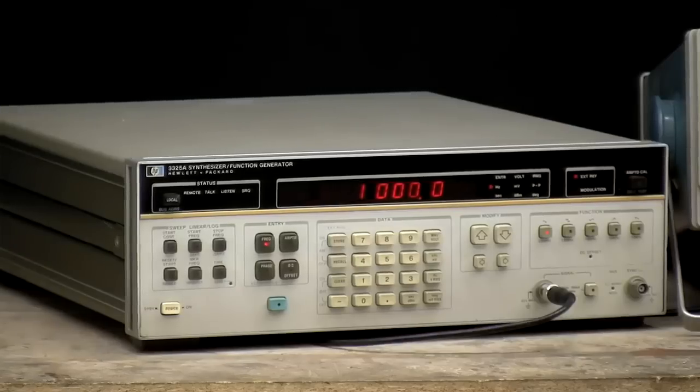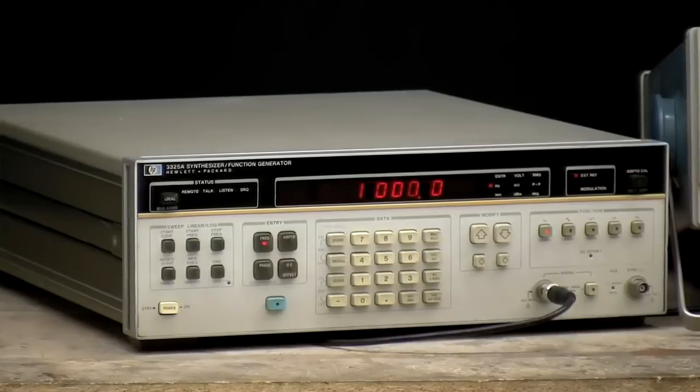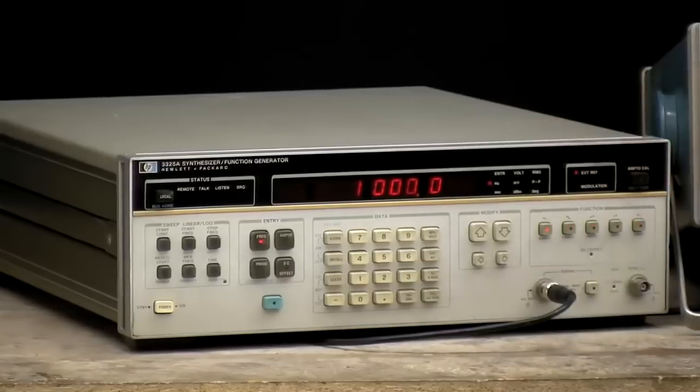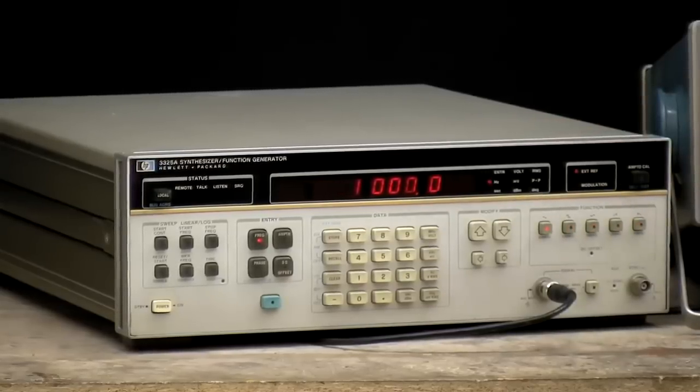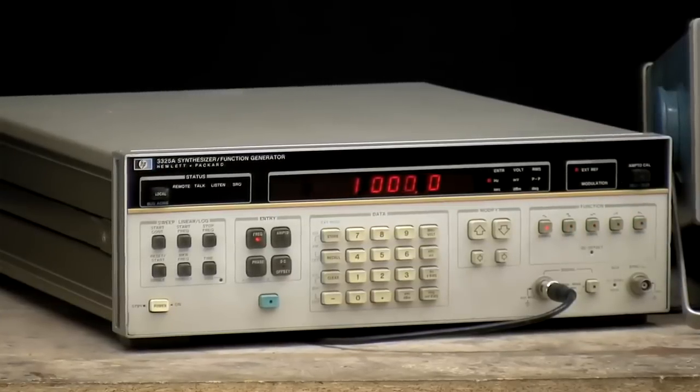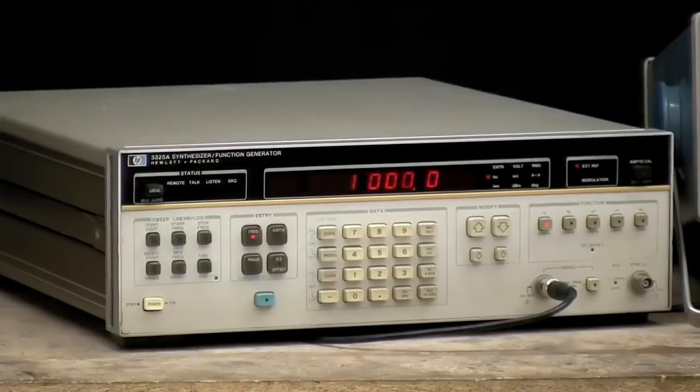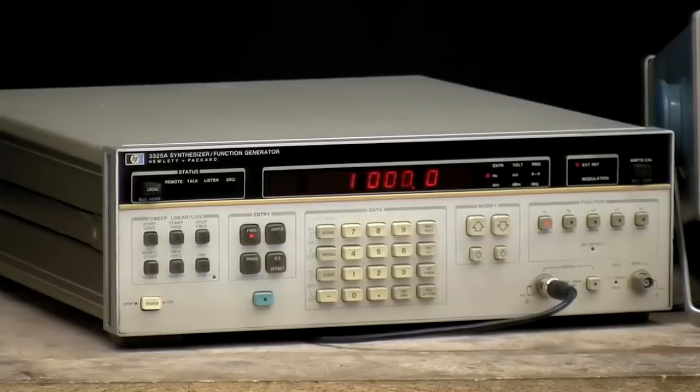First up, we need a signal generator to provide us with analog input signals, in this case an HP 3325 from 1978. It's still a pretty good generator, so if you don't mind the size, the weight, the power consumption, and the noisy fan, you can find them on eBay, occasionally for only slightly more than you'll pay for shipping.